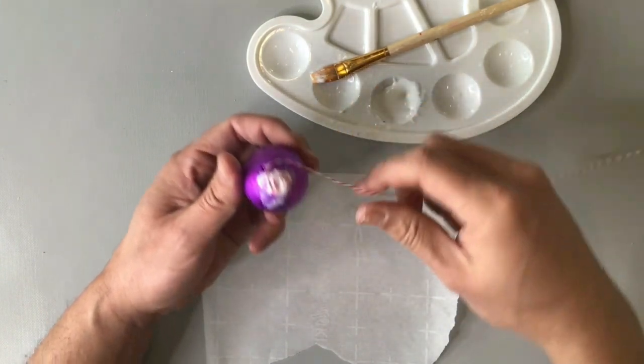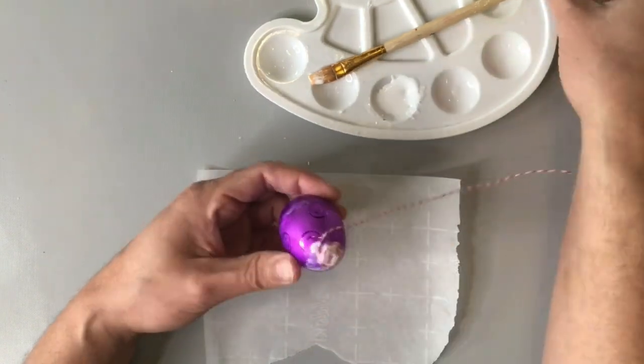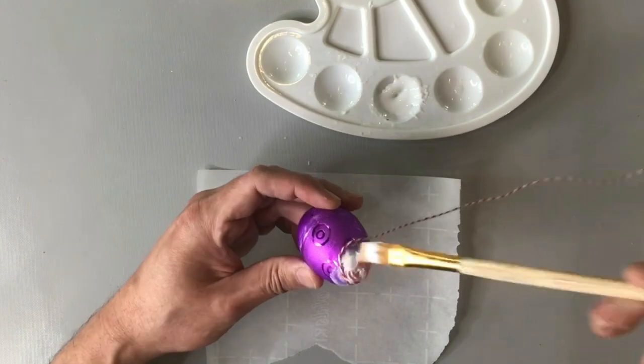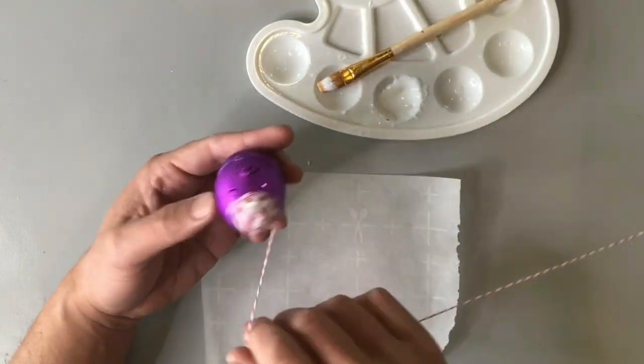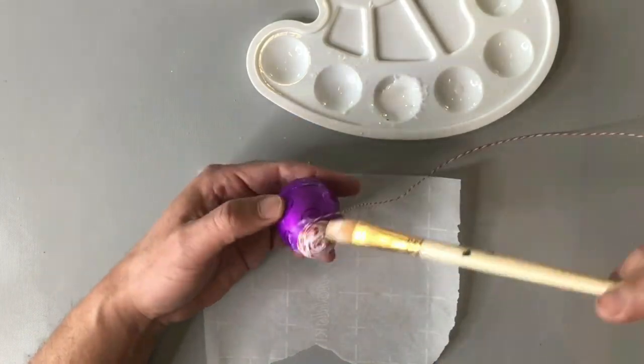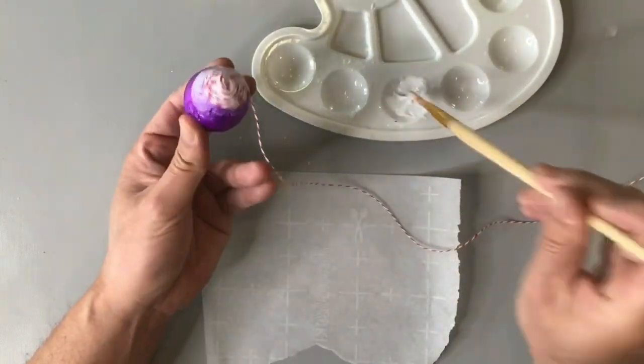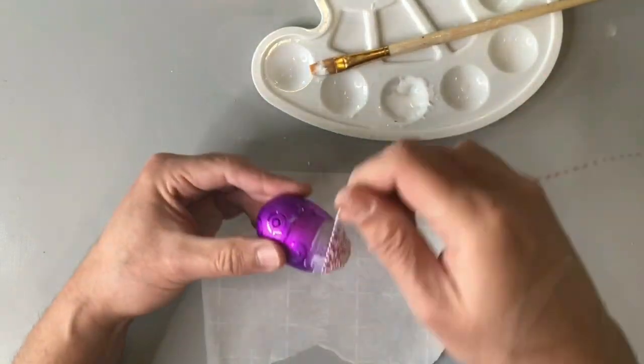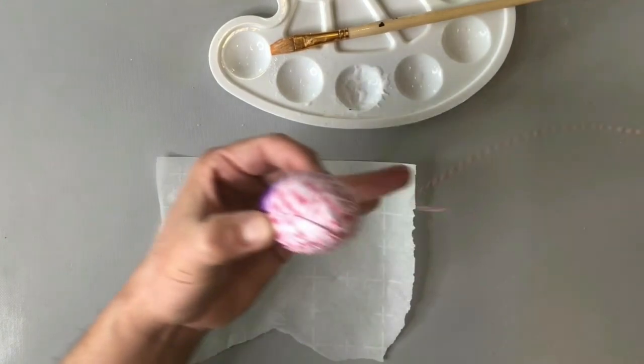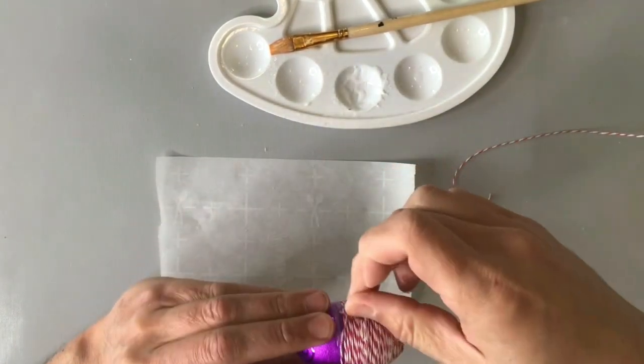You can see that as I'm wrapping it around, as I'm adding more tacky glue, I'm kind of taking my time and also letting gravity do as much of the work as possible. I'm not pulling very tightly, just trying to ensure as much as possible that those twine threads are as close together as possible.